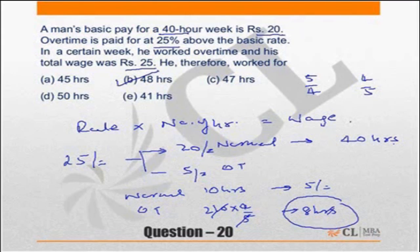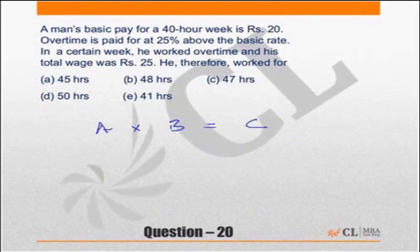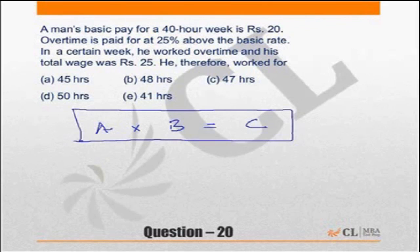The other way, you could have started checking the options straight away. Just to repeat — this is a very important relationship: A × B = C. This helps solve a large number of questions in quant across many areas. When we come to algebra, you will find me using this equation there too. I use it across all areas of arithmetic — time, speed, distance, etc. — and algebra.